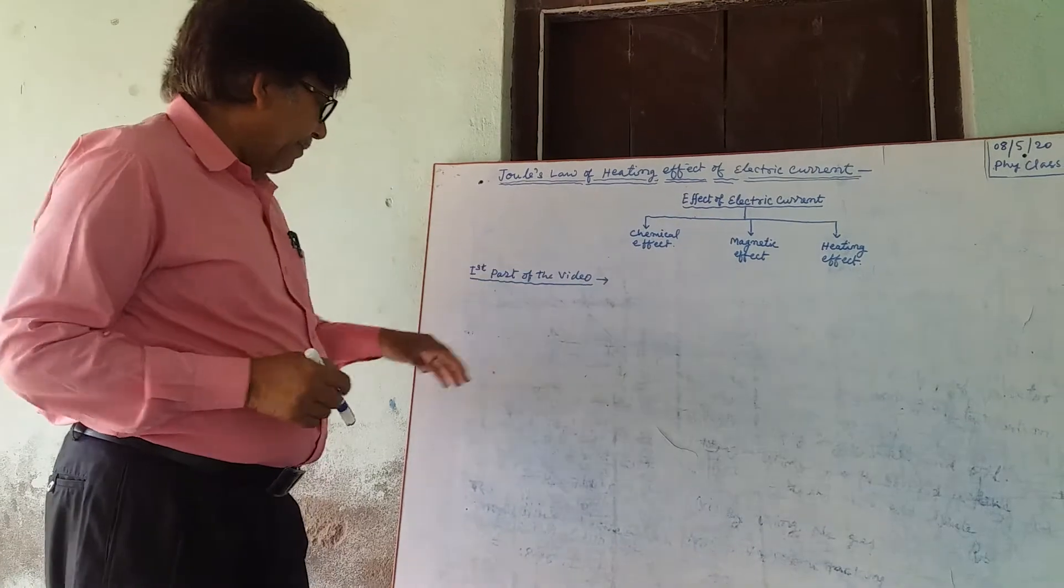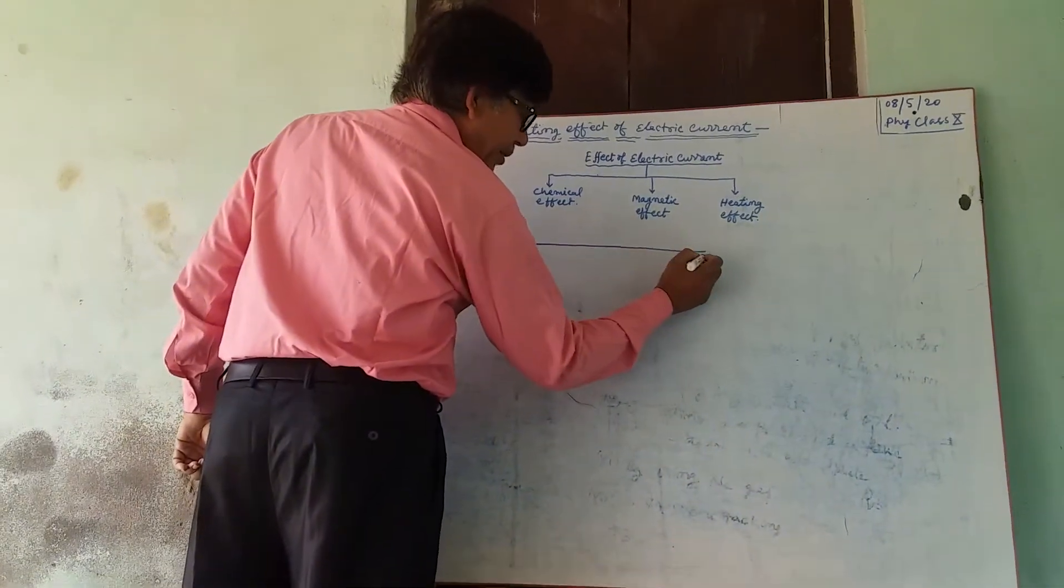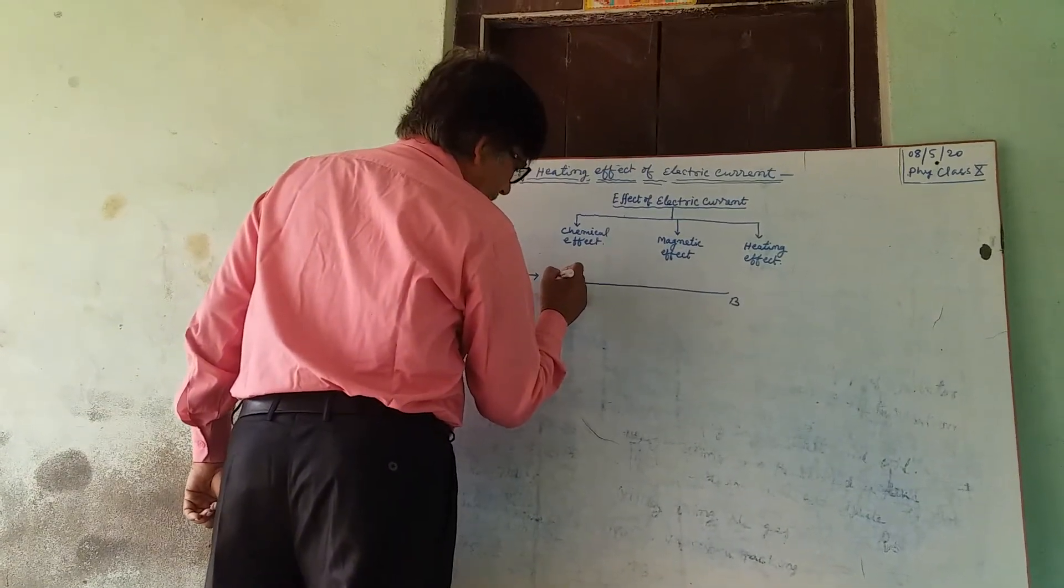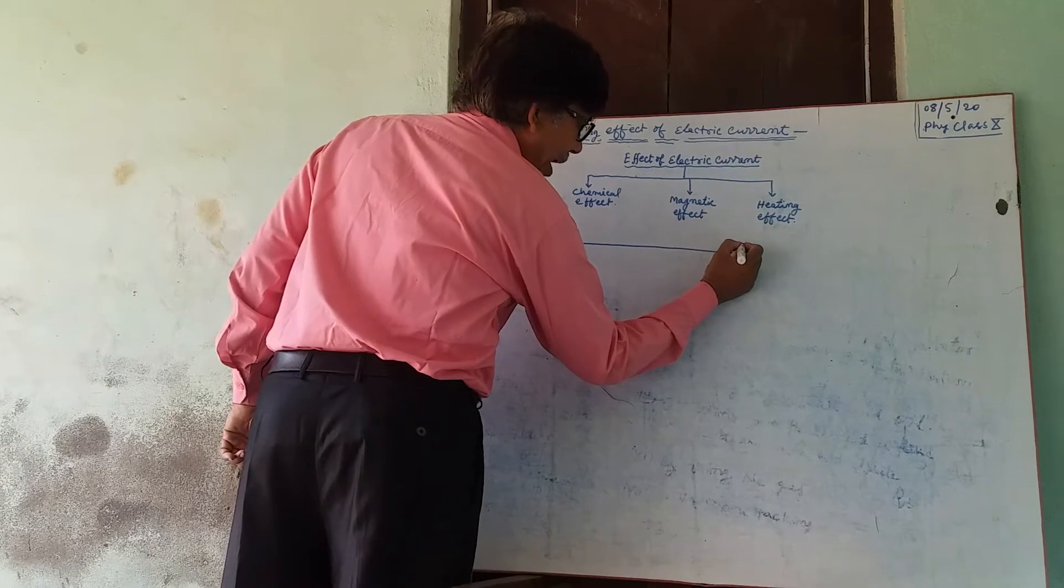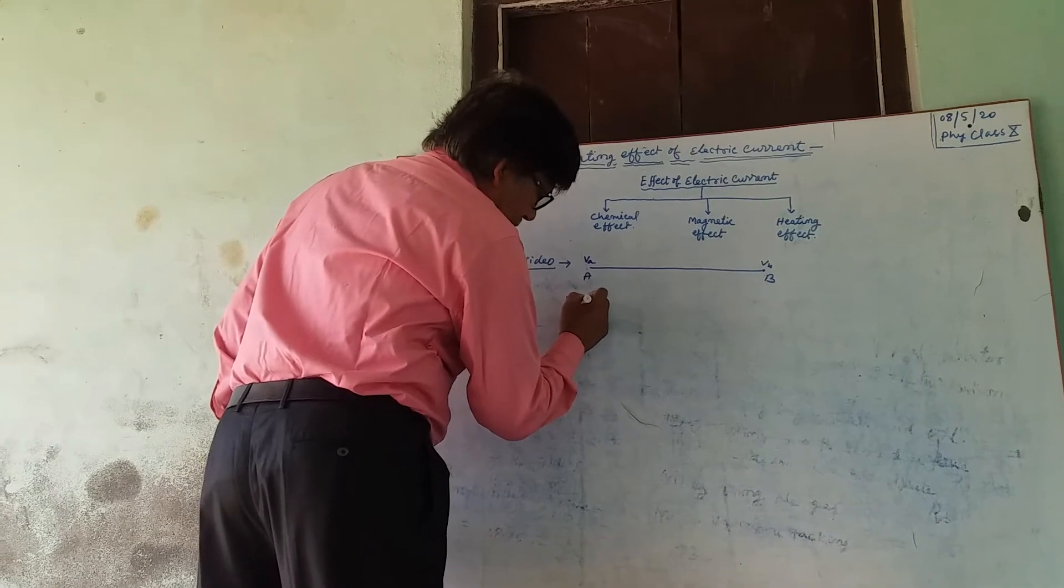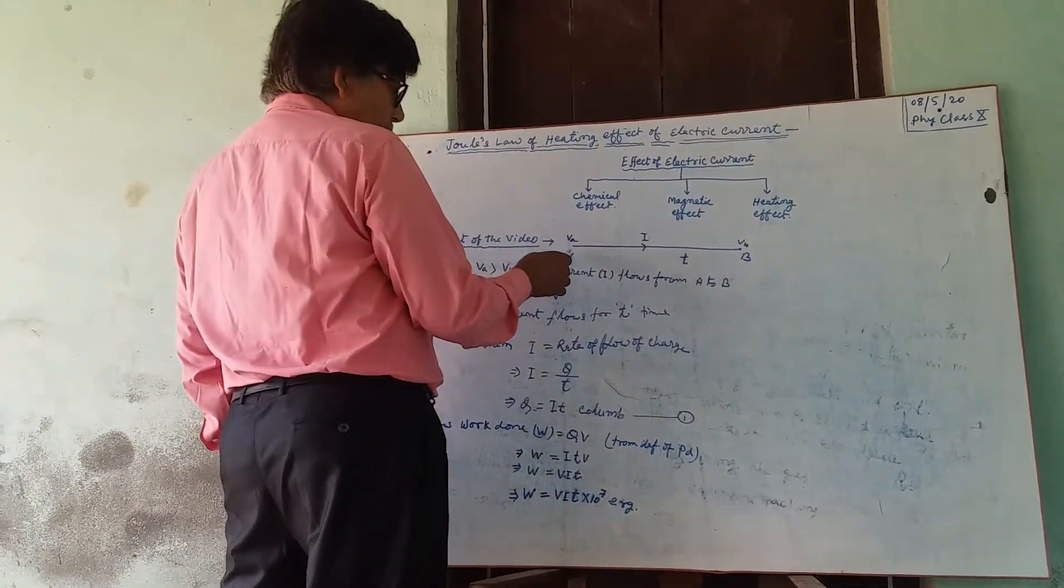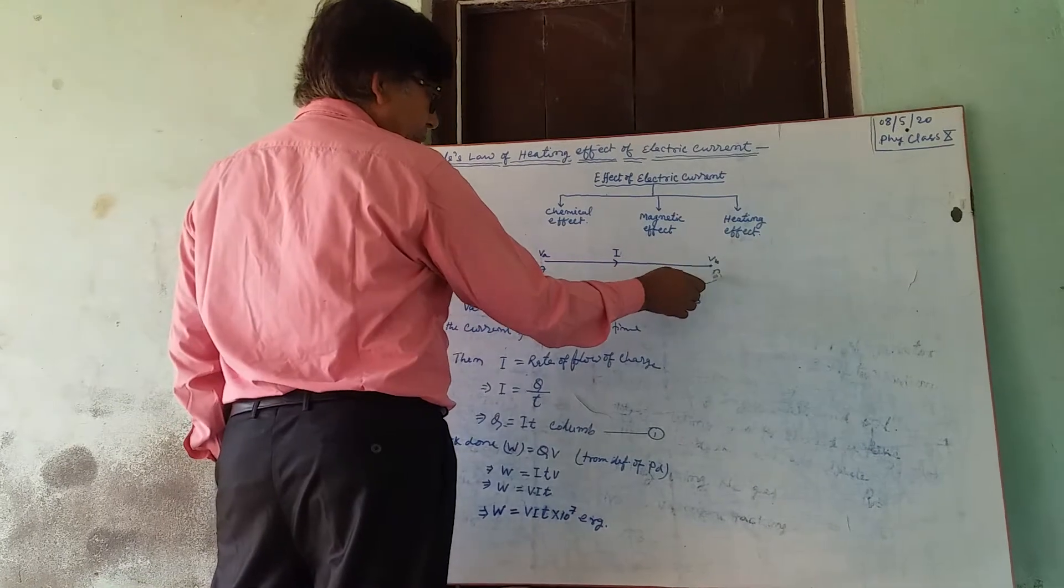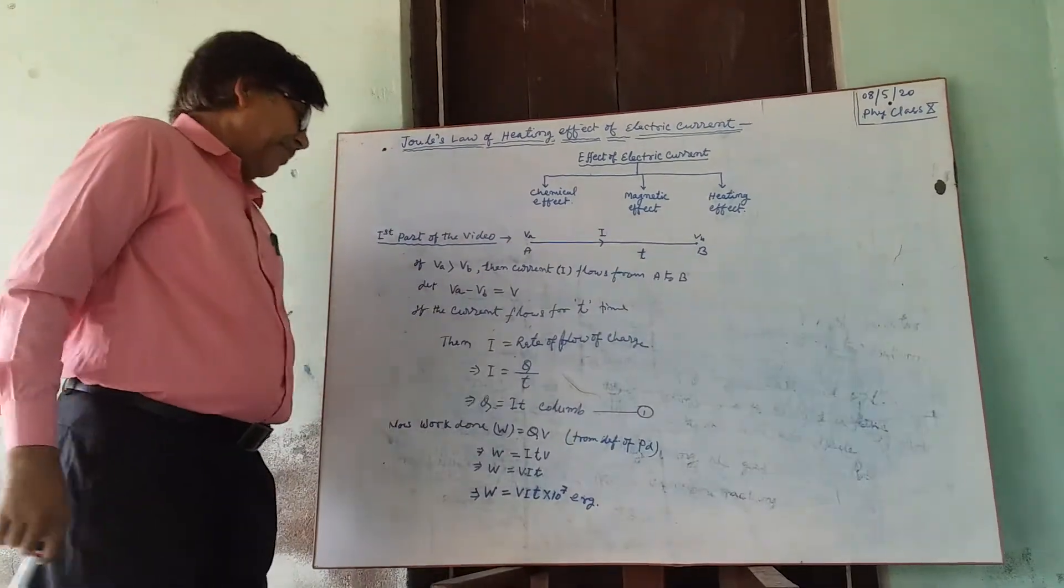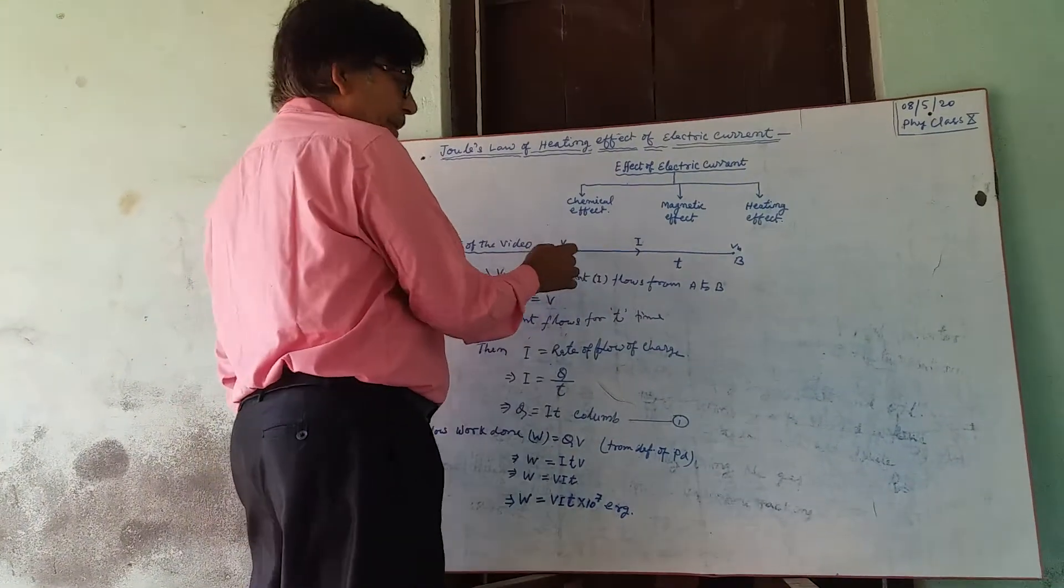I am making the first part of the video. Let's take AB be a conductor with potential at A VA and potential at B VB. If current I flows through the conductor for time T, then VA minus VB equals V. Suppose VA greater than VB.